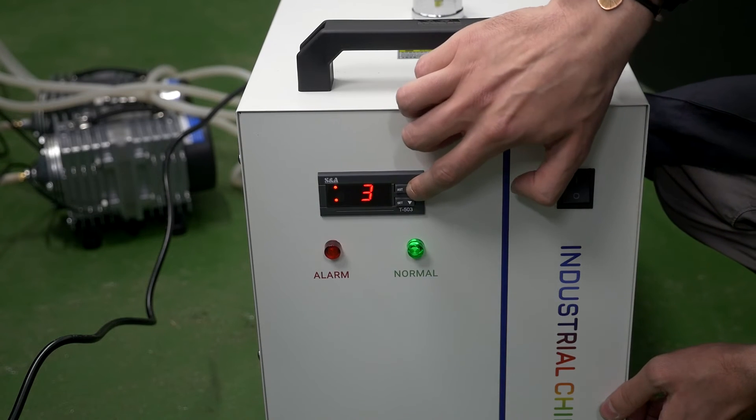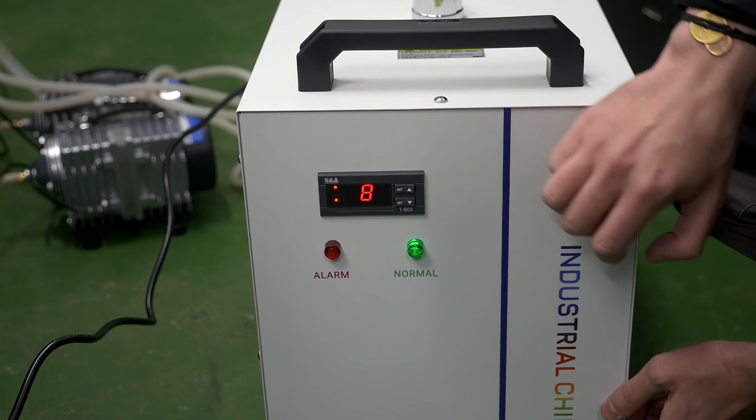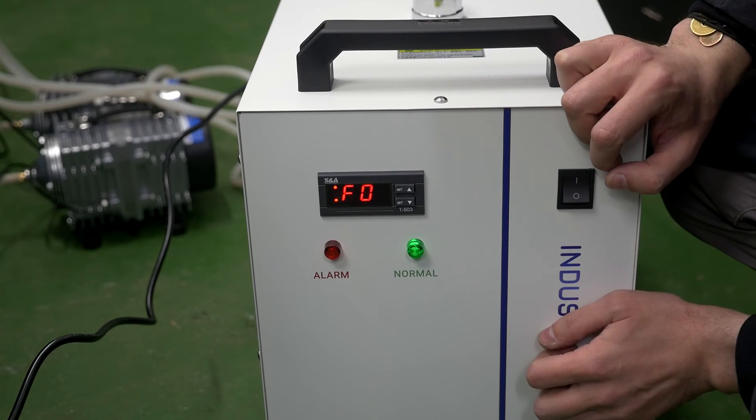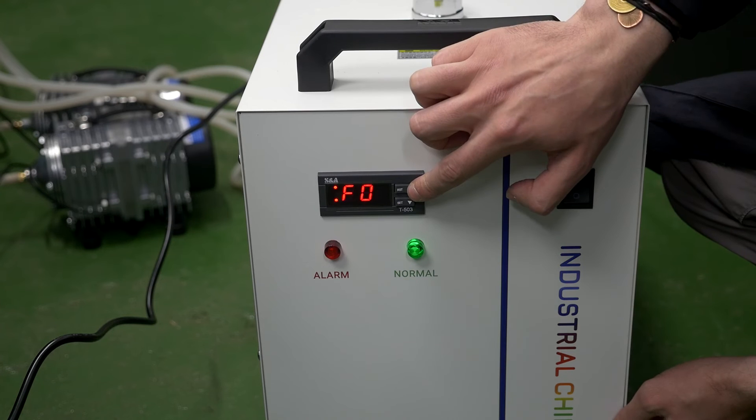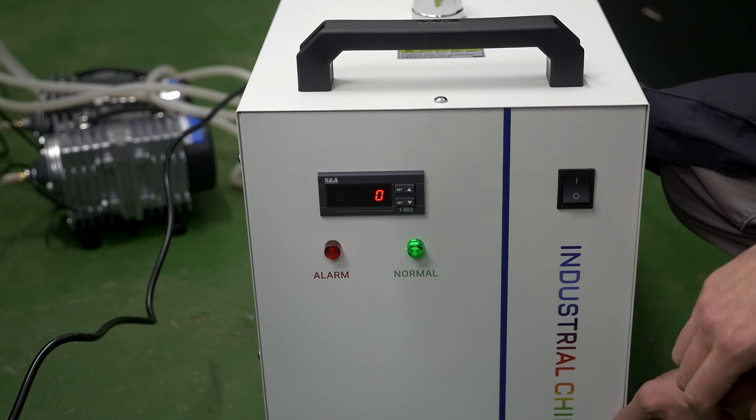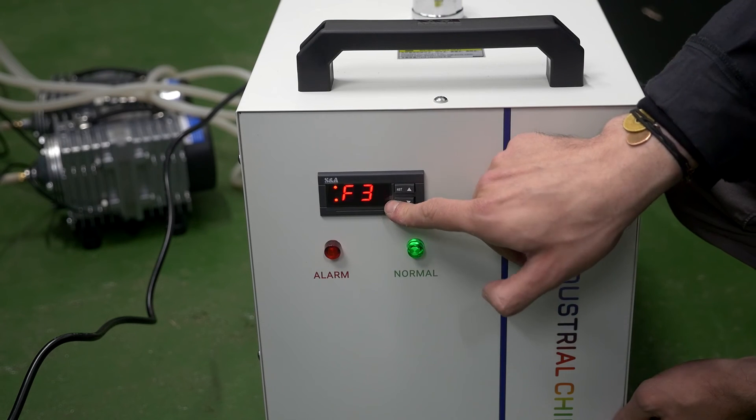Use the up arrow key to select the eight symbol and press set. Select the F3 parameter and press set. Set the value to zero and press set. This parameter changes the smart water temperature support mode to manual.